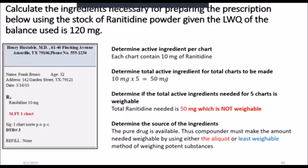Unfortunately, 50 mg is not weighable. We've determined the source of the active ingredient — in the last example it was a tablet, but this time it is the pure drug. So the compounder must make the amount needed weighable by using either the aliquot method or the least weighable method. I want you to recall those two methods as we're going to look at both in this example.